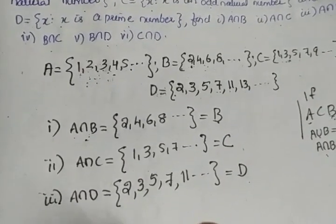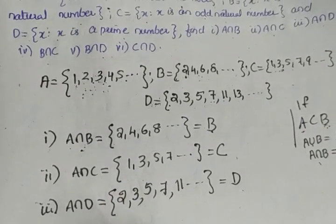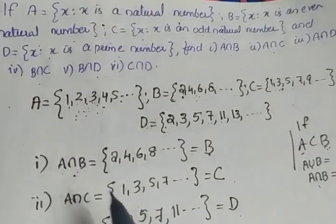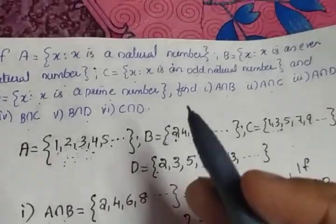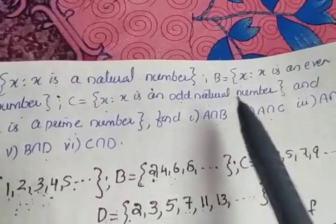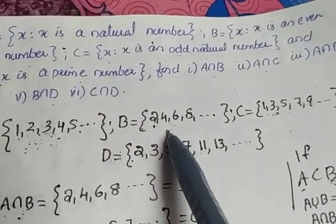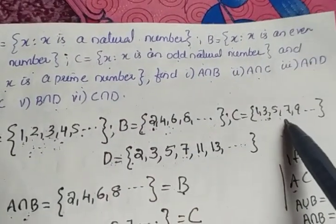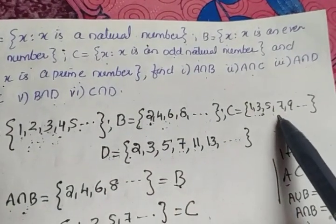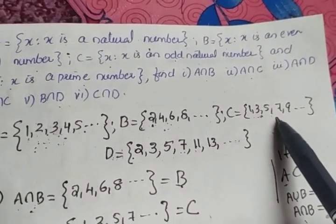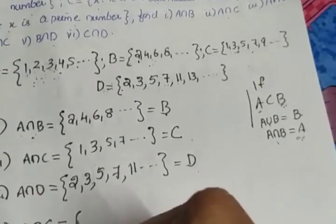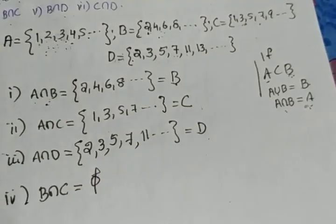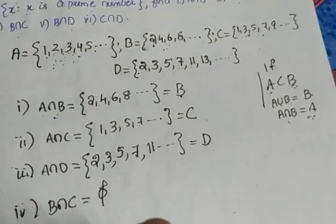Fourth question: B intersection C. B is the set of even integers and C is the set of odd integers. There is no element common to both, so B intersection C is the null set.